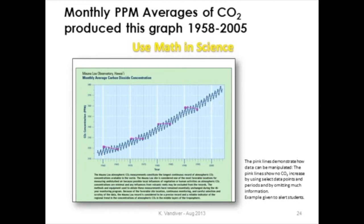This is a fun use of math and science, particularly for older kids — looking at a graph of CO2 levels going up, but how someone could make an argument using only certain data points over a five-year time to say the CO2 is not increasing. These graphs and other information have a wealth of detail that you could use in many different ways.